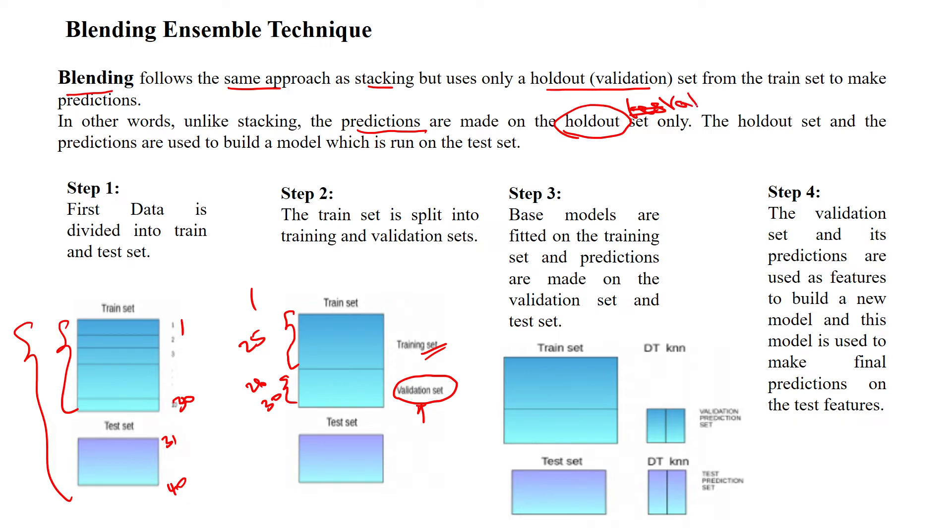Validation data set, the validation data set and its predictions are used to build a model. Then that model, new model will run on testing data set, testing data set to evaluate the performance of model.